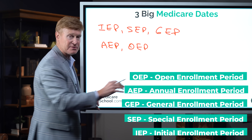The first three acronyms have to do with starting Medicare — when people are able to start their Medicare A and B benefits. This is when someone's either turning 65, or maybe they worked beyond 65 and are now 67 or 68. The Initial Enrollment Period is for someone starting at 65, covering a seven-month window. The Special Enrollment Period is for people who didn't start Medicare at 65 because they or their spouse were still working. For people who miss the IEP or SEP, they're stuck with the GEP. After we have Medicare, we deal with the AEP and OEP.